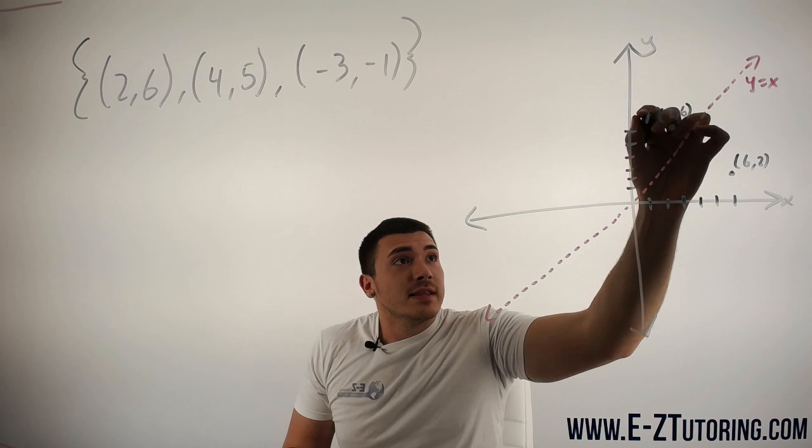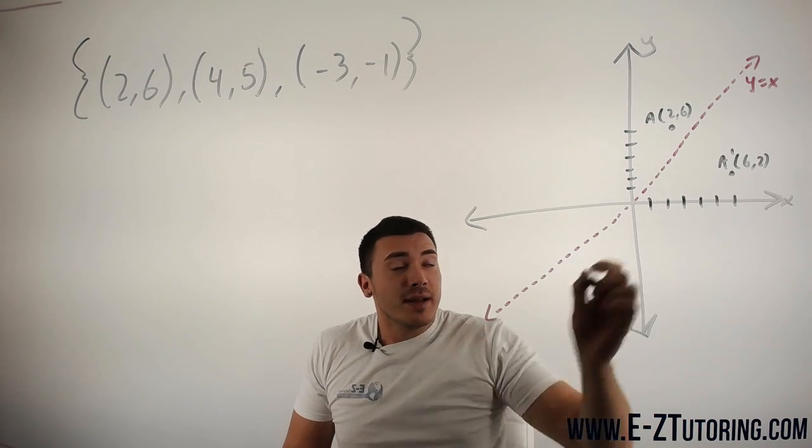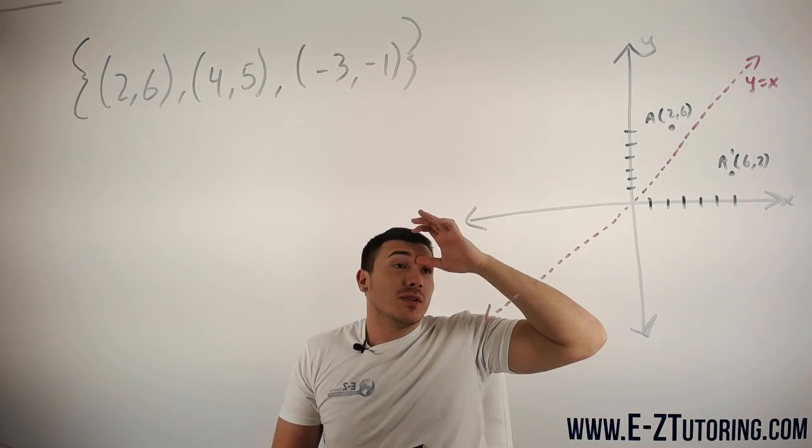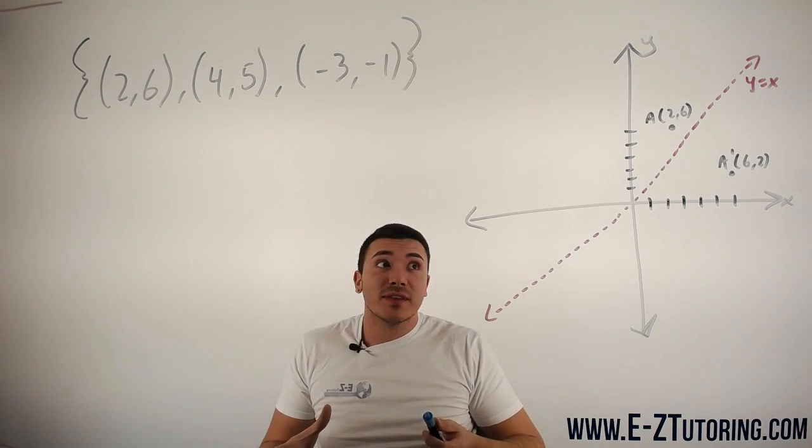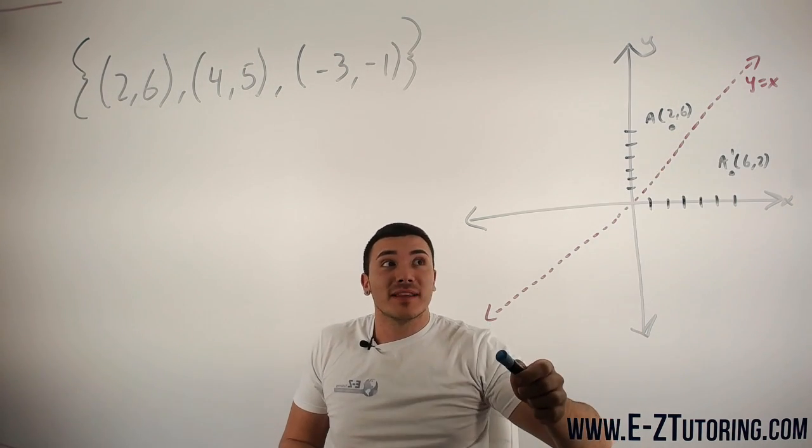So I will call this A and I will call this A prime to say that it has been reflected. Like I said, all you're doing when you're finding the inverse is really just reflecting it across this line.